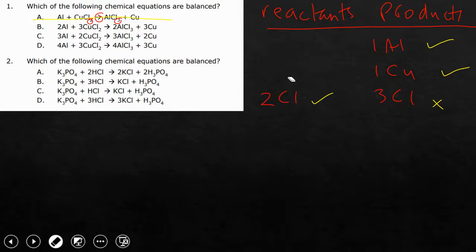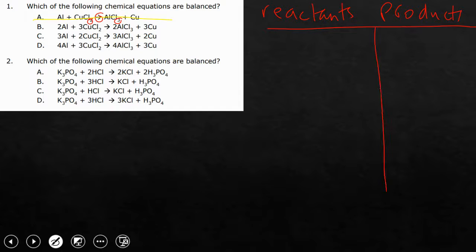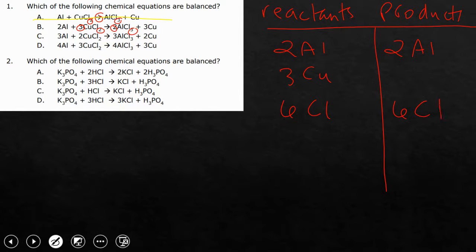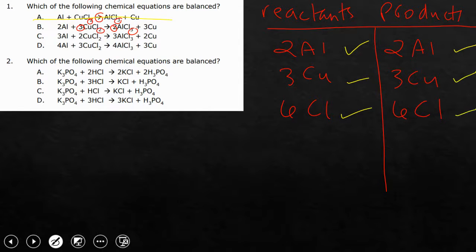Let's try option B: reactants have 2 aluminum, 3 copper (from coefficient 3), and 6 chlorine (coefficient 3 times subscript 2). On the product side, I have 2 aluminum, 6 chlorine (coefficient 2 times subscript 3), and 3 copper. Checking: 2 aluminum equals 2 aluminum, 3 copper equals 3 copper, and 6 chlorine equals 6 chlorine. Answer choice B is the correct answer.